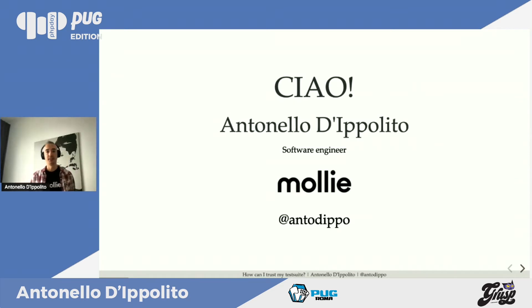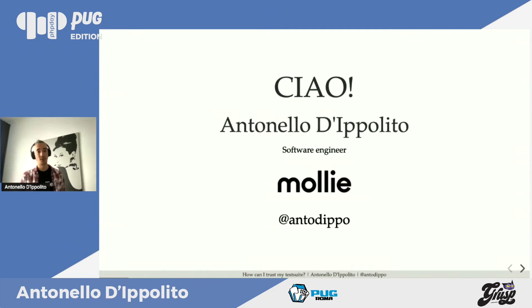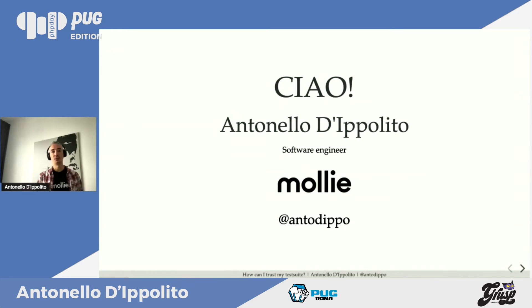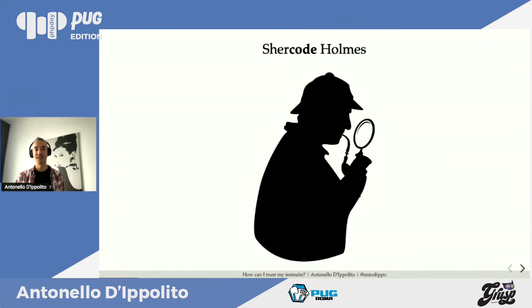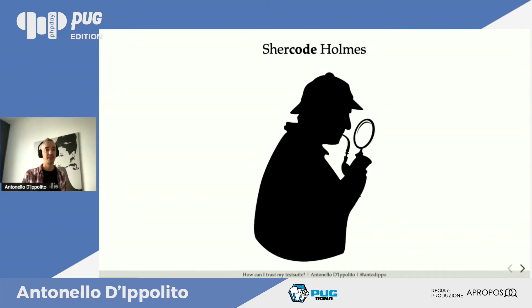Avevo bisogno di un personaggio per questa storia, perché si tratta di un'investigazione: cercare di capire quali tool, quali metriche, quali approcci possono aiutarci a capire quanto una suite di test che non conosciamo ci possa aiutare nel nostro sviluppo. Ho tirato fuori Sherlock Holmes come personaggio — sono appassionato dei libri di Arthur Conan Doyle. Il nostro Sherlock parte nella sua investigazione: è un programmatore che arriva su un nuovo progetto.